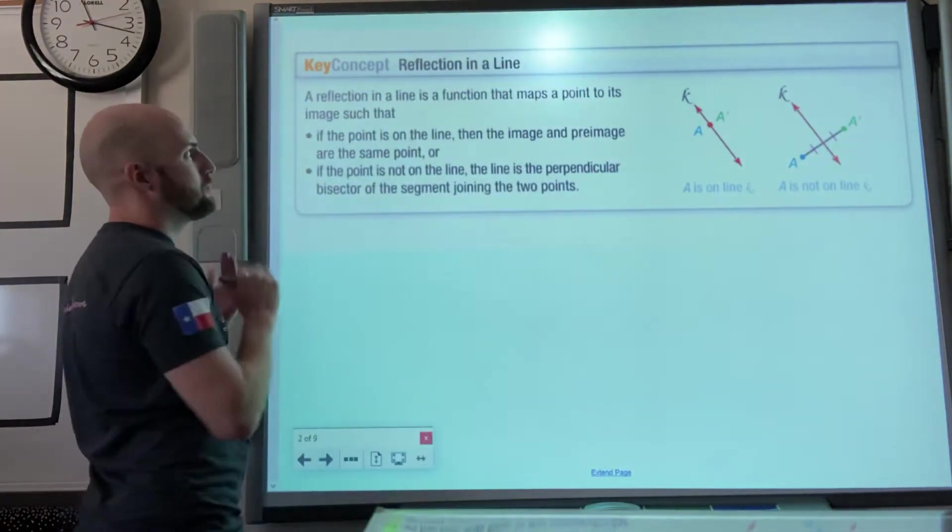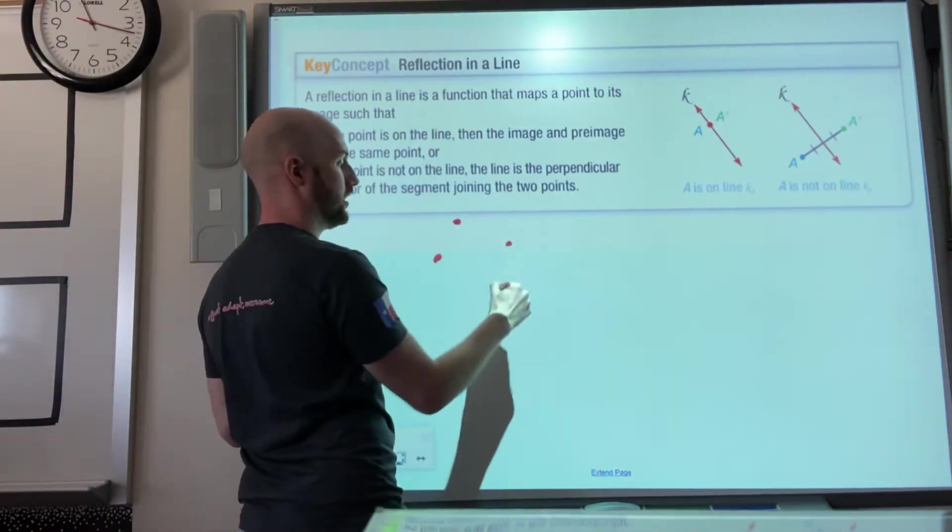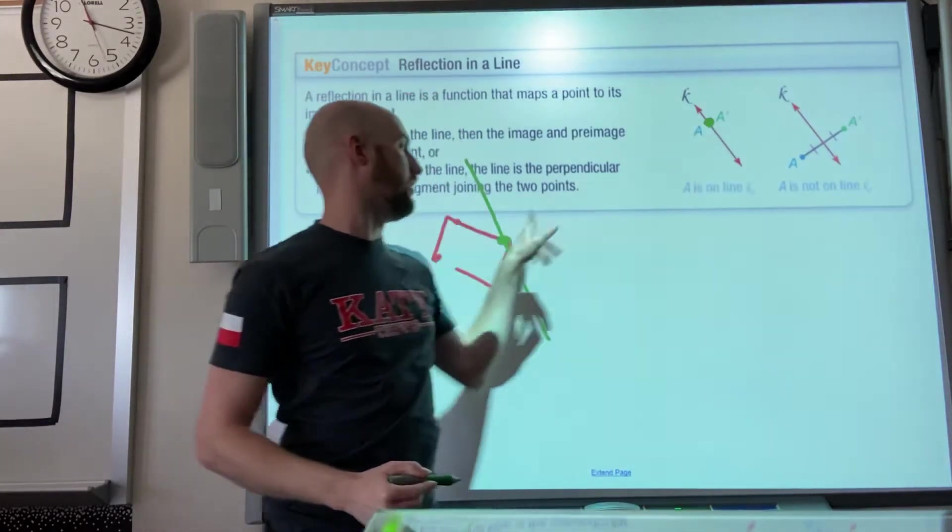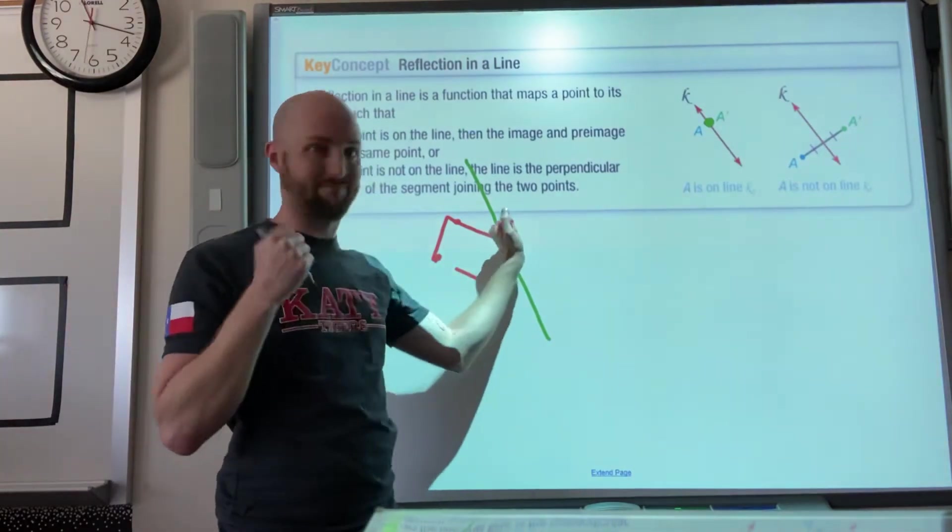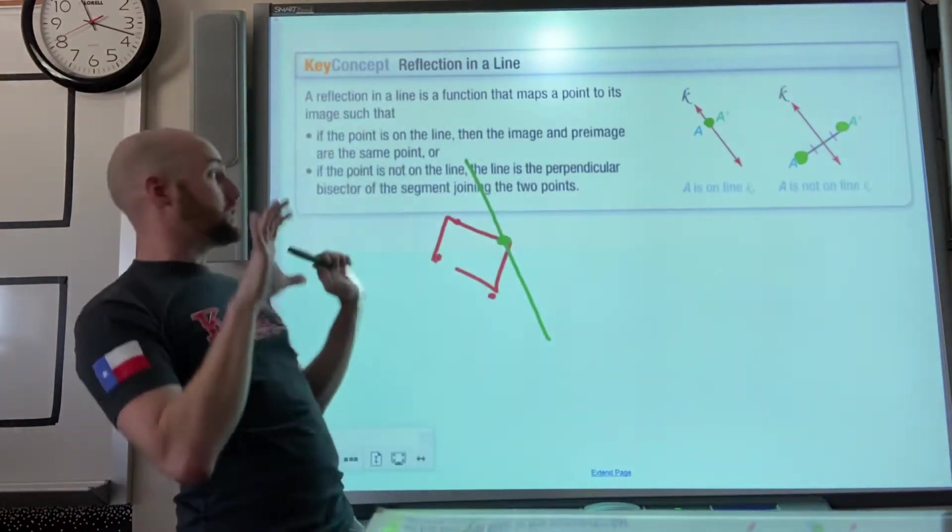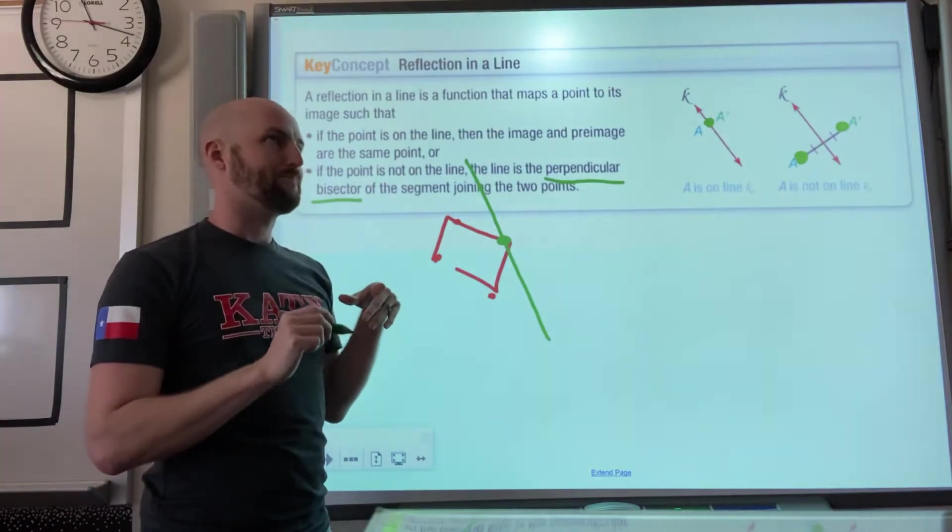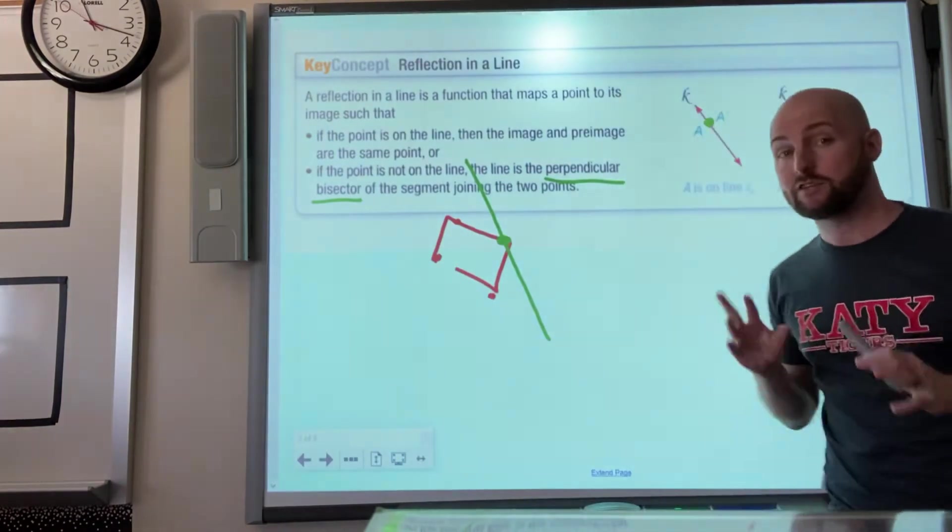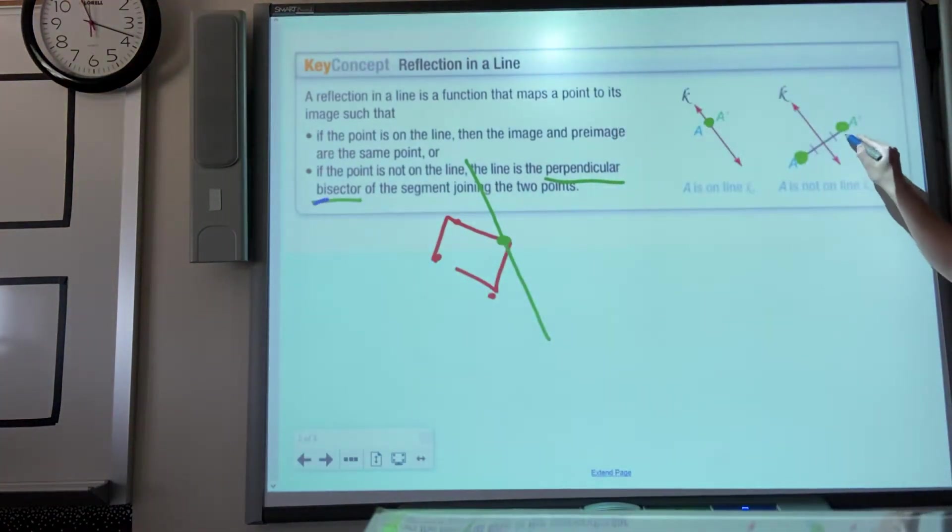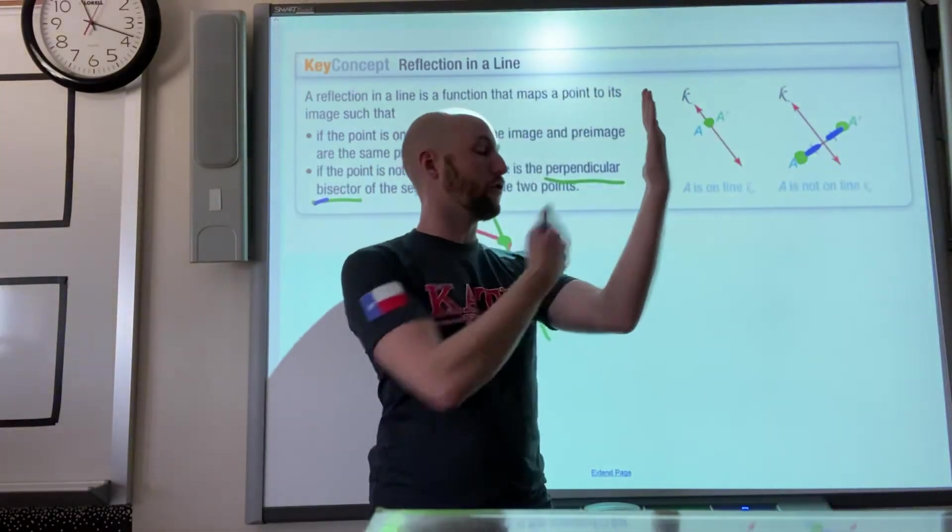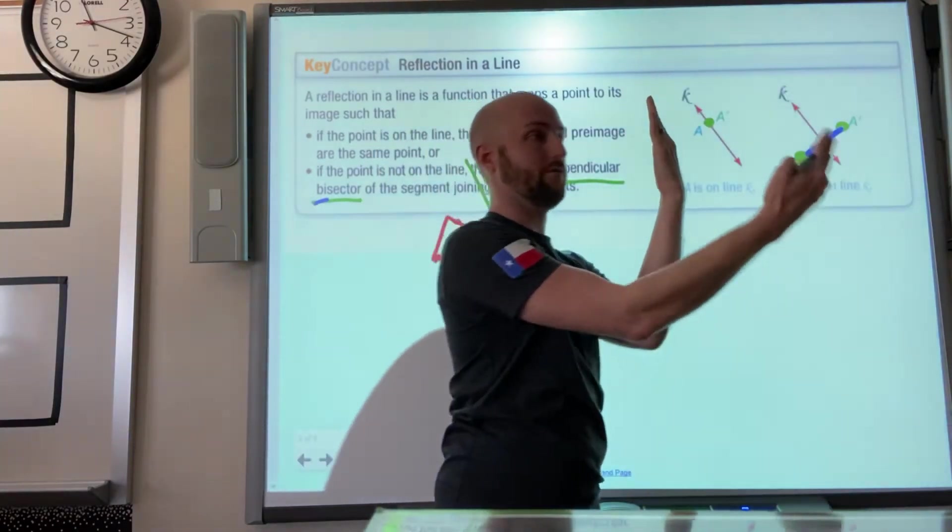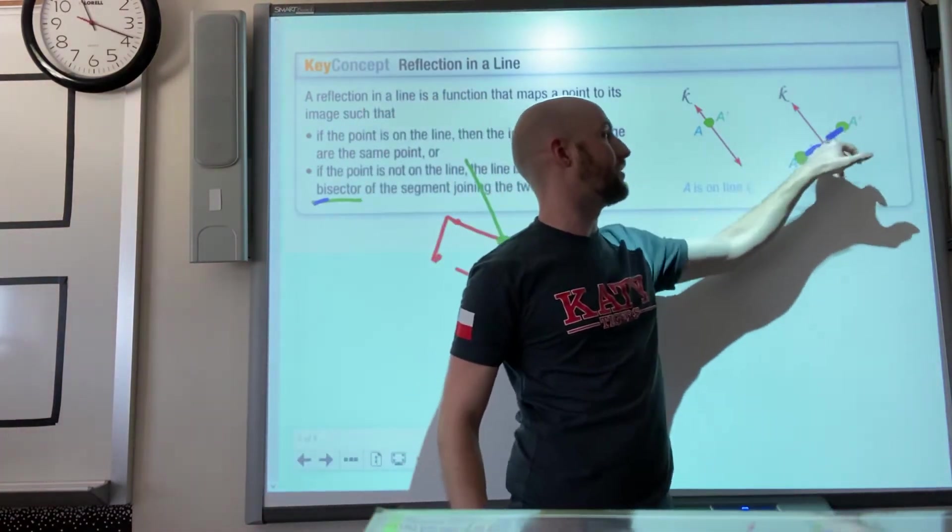Quick things here: if we have a shape with a lot of points and we reflect it across a line, if a point lands physically on the line, that point will be in the same location after the reflection because it's on the mirror. Any other point, according to the definition, is the perpendicular bisector. That's a fancy geometry term. Bisector means to cut something in half.